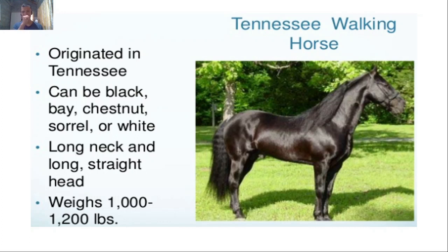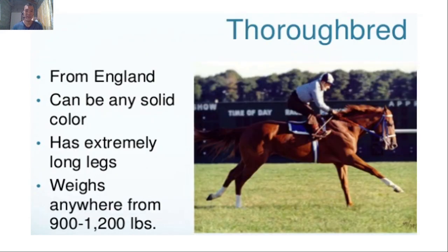The Tennessee Walking Horse from Tennessee, US, can be black, bay, chestnut, sorrel, or white, with a long neck and long straight head, weighing around 1,000 to 1,200 pounds. The Thoroughbred, discussed earlier, is from England. It can be any solid color and has extremely long legs — just like long-legged dogs, long-legged horses are typically bred for racing. They weigh around 900 to 1,200 pounds.